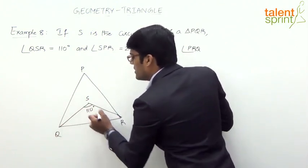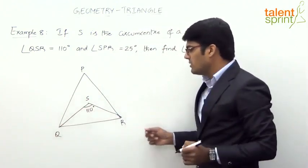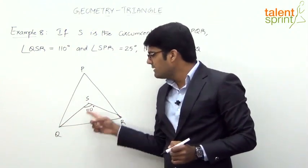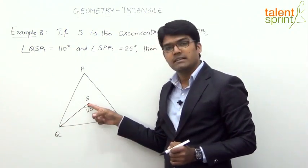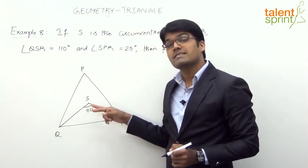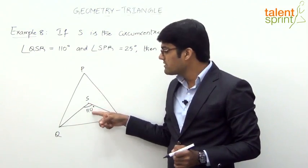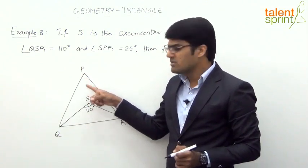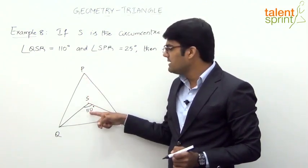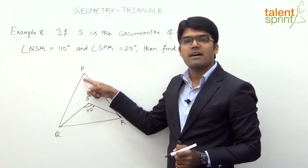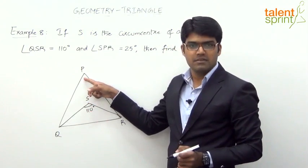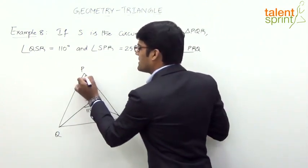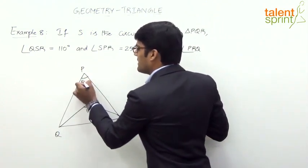From our knowledge of circumcenter, we know that the angle made by any side with the circumcenter is twice the vertical angle. That means 110 degrees is 2 times angle P. So if this is 110, angle P should be half — 55 degrees. So this angle here is 55 degrees.